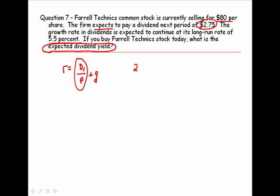So D1 is $2.75. The current price of the stock is $80. The expected dividend yield is 0.0344, which is 3.44%. That's all they asked for here was the expected dividend yield and not the expected rate of return on the stock.